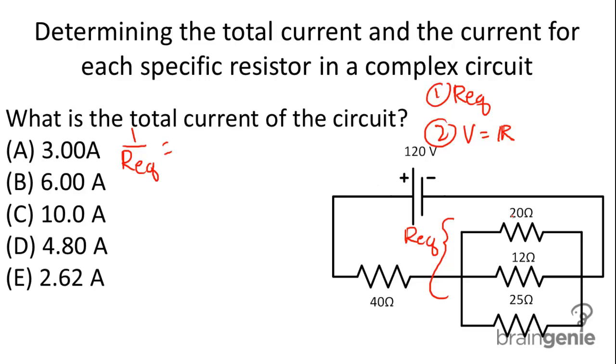1 over REQ, we're going to solve for this section of the circuit here. That's equal to 1 over 20 plus 1 over 12 plus 1 over 25. We get an equivalent resistance of 5.77 Ohms. So this section here is 5.77.